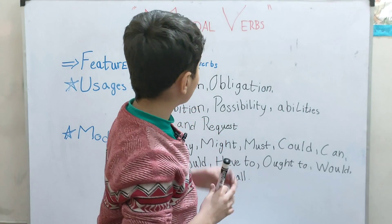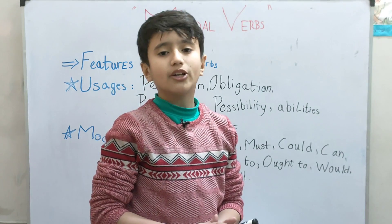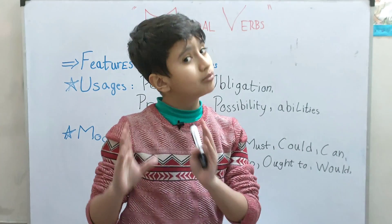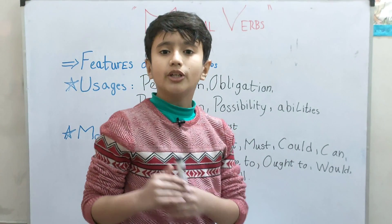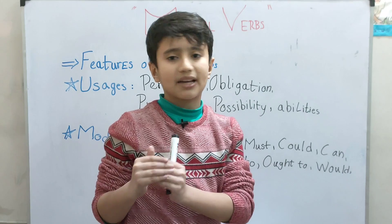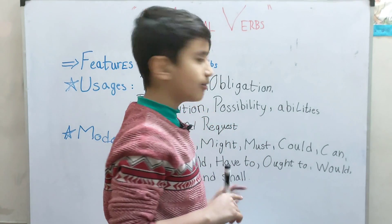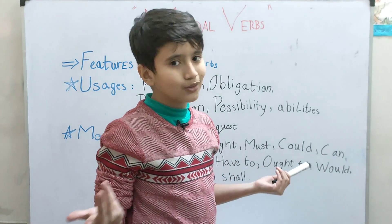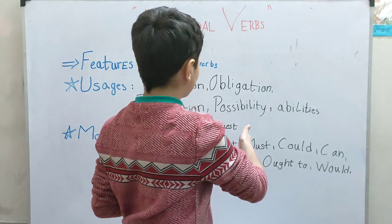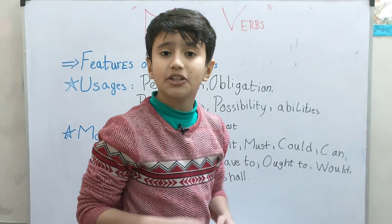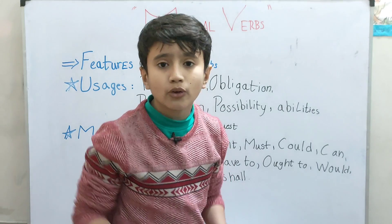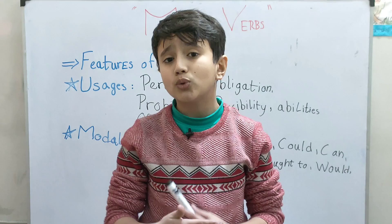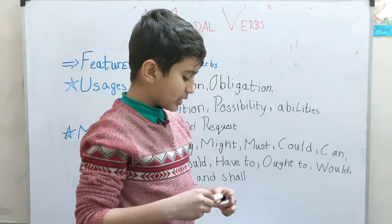Another exceptional case: with 'have,' for example, you can say 'he did not have' or 'he didn't have.' But with other modal verbs, you cannot use 'did not' or 'didn't' — it is not allowed. You will only use it with 'have,' not with any other modal verb. For example, 'he didn't must' or 'he didn't might' — it doesn't work. It has no such rules, so you cannot use it. These are what we call exceptional cases.